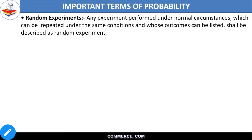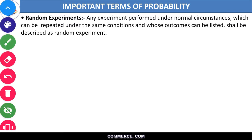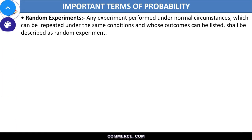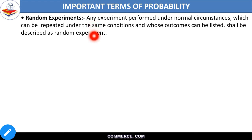Now let's move to the important terms of probability. Random experiment — jaise coin toss karna ya 52 cards mein se card draw karna — ye sab experiments hain. All the things that we perform in normal circumstances to collect data, these are experiments. These are some examples of random experiments.